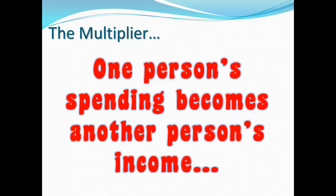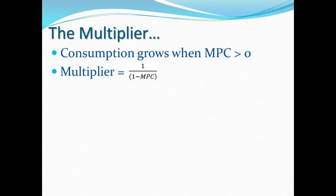With the multiplier, one person's spending becomes another person's income, and that becomes another person's spending. It cascades through the economy, multiplying and gaining steam — like a snowball rolling down a hill, picking up more snow as it rolls. When I spend, my spending becomes somebody else's income, and they spend it on somebody else's goods, and it keeps gaining steam. The multiplier is calculated as 1 over 1 minus MPC, which is also 1 over MPS.